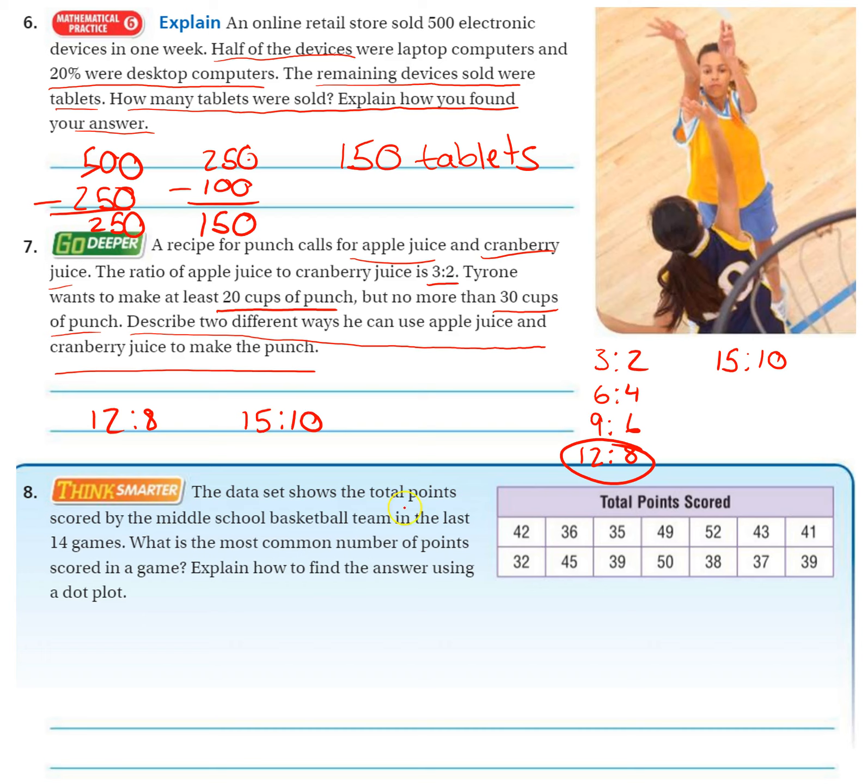Okay, number eight. The data set shows the total points scored by the middle school basketball team in the last 14 games. What is the most common number of points scored in a game? So we're just looking for the mode, mode most. So we can make a dot plot if we wanted to. We could do a lot of different ways to solve this one.